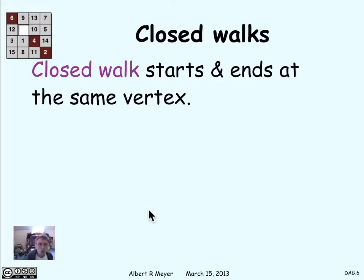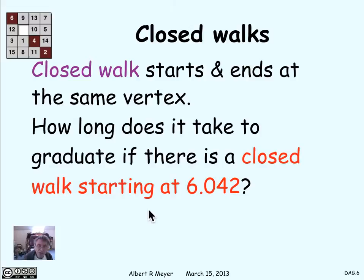Now, what happens if you have a closed walk? A closed walk is a walk that starts and ends at the same vertex. Suppose there was a closed walk that started at 6042 and ended at 6042 — how long does it take to graduate then? It takes a long time, because you can't take 6042 until you've taken 6042, and you're never going to be able to take it. That's a bad thing.